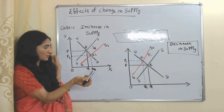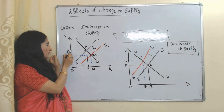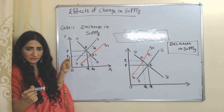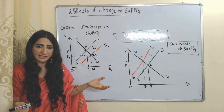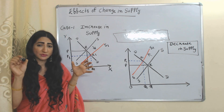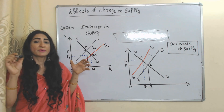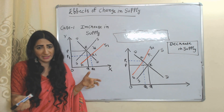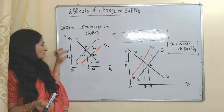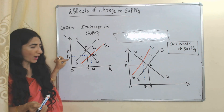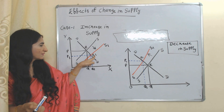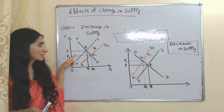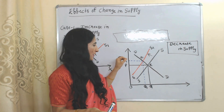But prices have reduced from P to P1. Why have prices reduced? Because demand is constant and only supply is increasing. That means producers have so much remaining stock — we can say that producers have so many remaining products to sell but consumers are not demanding. Eventually producers reduce the price. That's why at this new equilibrium point E1, our prices have reduced from P to P1.